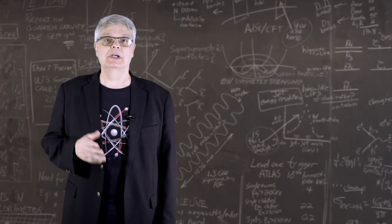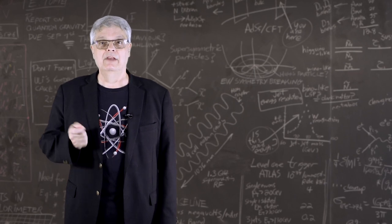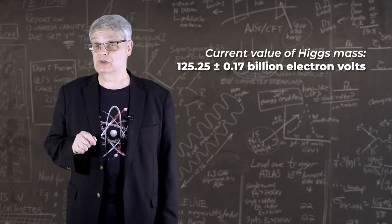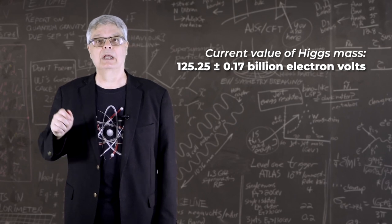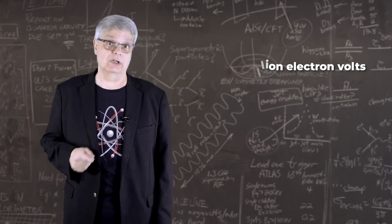Well, both experiments have measured the mass of the Higgs boson with considerable precision. The current value is 125.25 plus or minus 0.17 billion electron volts, or more than 133 times the mass of a proton.